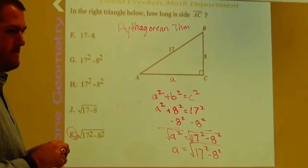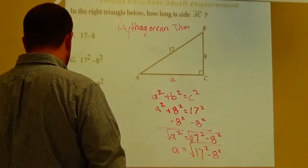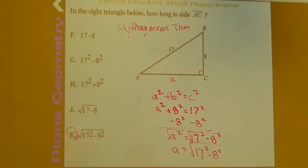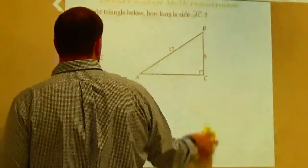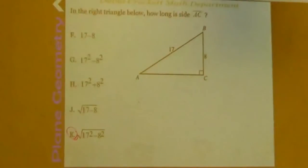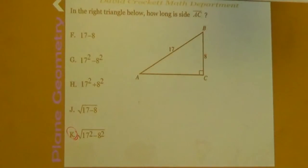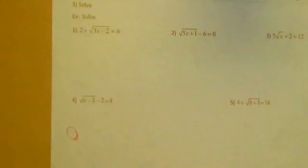Alright, questions on this one? Alright, today we are starting a new section — it kind of goes with what we did last week, but now we're talking about radical equations. A radical equation is exactly what the name says — it is an equation including a square root. We're taking the equations you solved before that have variables, but now we're including the square root.